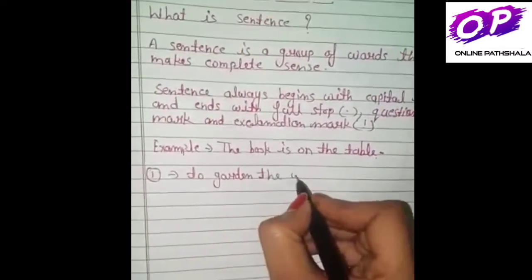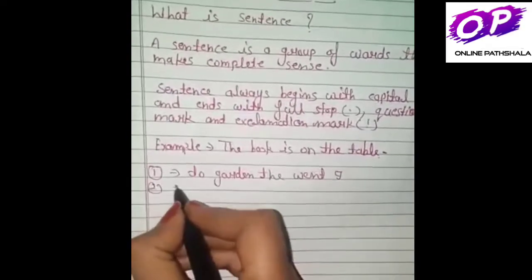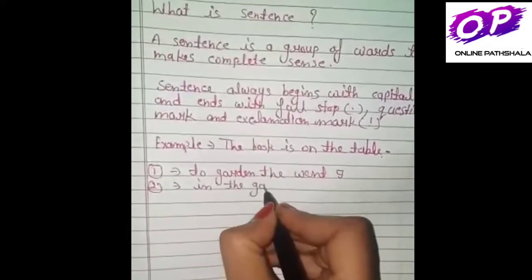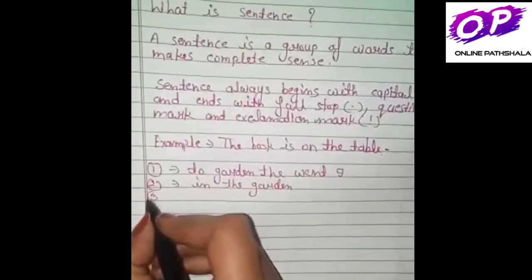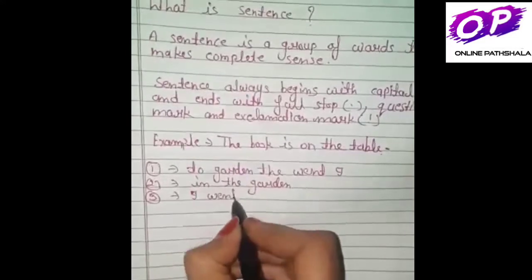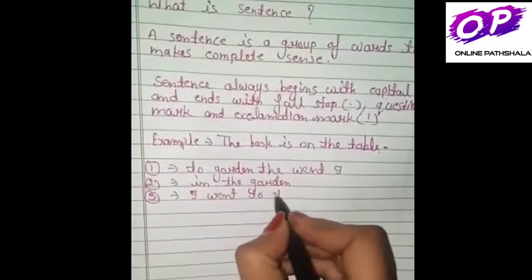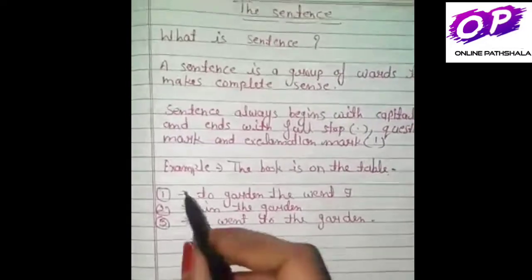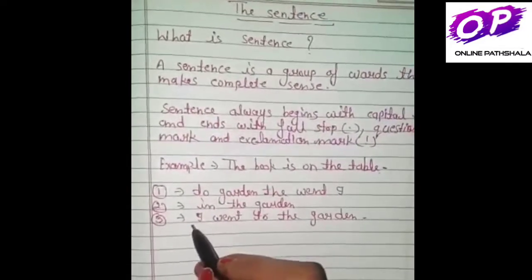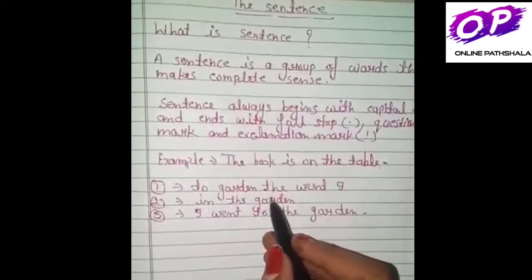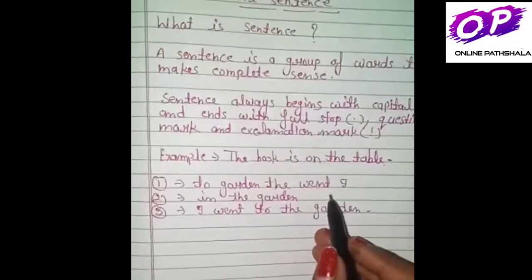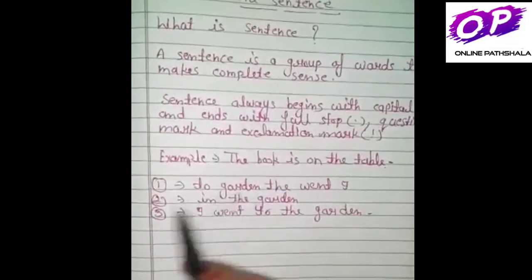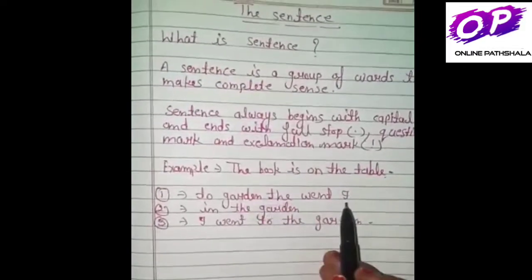अब कुछ और examples देखेंगे। First example: 'to garden, the wind, I' — in the first example, the group of words does not make sense. मतलब पहले वाले example में इसका कोई sense नहीं निकल रहा है, इसलिए इसे sentence नहीं कहेंगे।